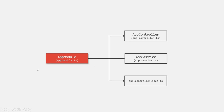If we create a new module in our application, it must be connected to this app module so that the NestJS application will be aware about that module. When we create a NestJS project using the NestJS CLI, it creates an app module with these associated files: the app.controller.ts file, which contains the app controller class; the app.service.ts file, which contains the app service class; and the app.controller.spec.ts file, which contains the testing logic for that app controller.